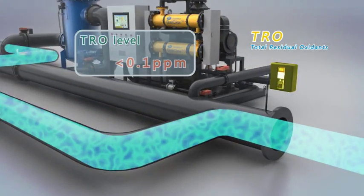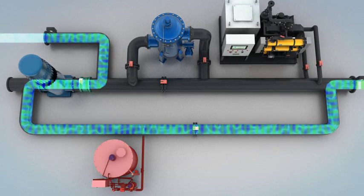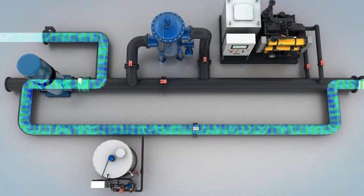If TRO concentration is lower than 0.1 ppm, ballast water will be discharged to the sea directly and system will not be operated.